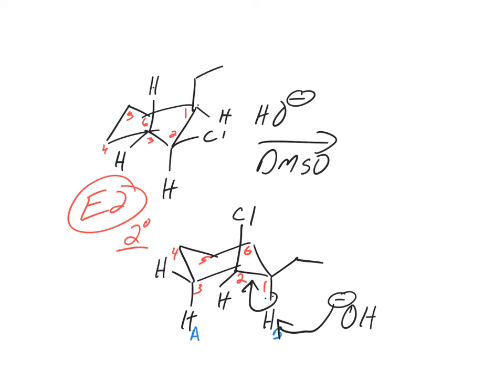E2 mechanism. Double bond there. No wedges and hatches ever with pi bonds. You've never seen me draw a wedge and a hatch with a pi bond. Don't do it.